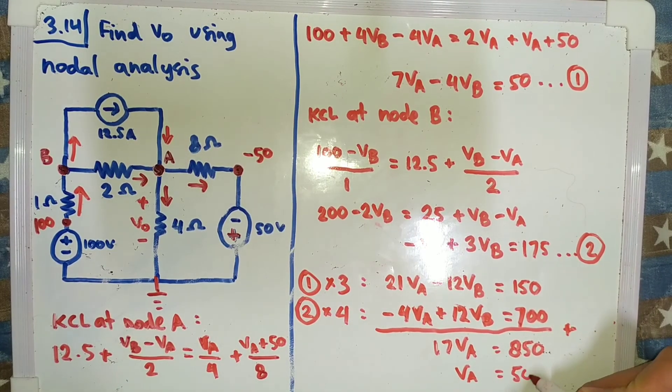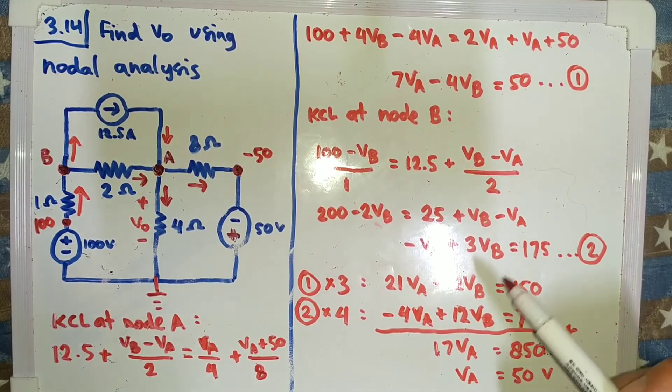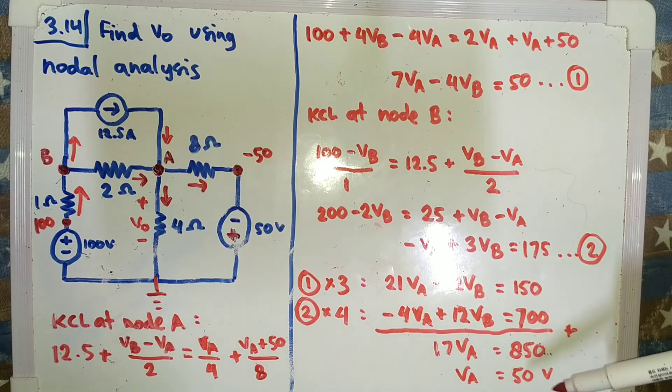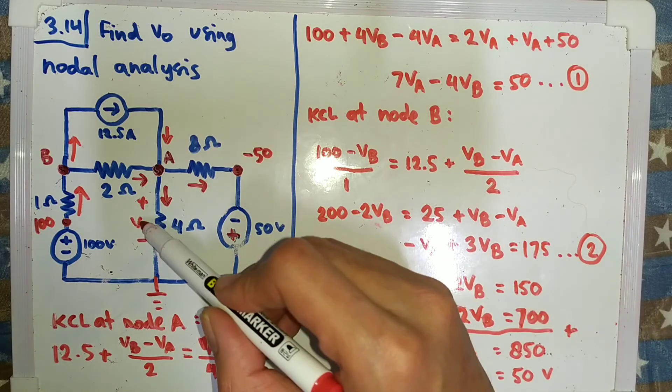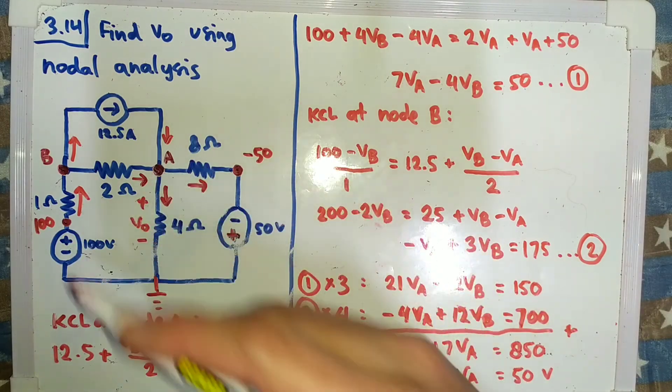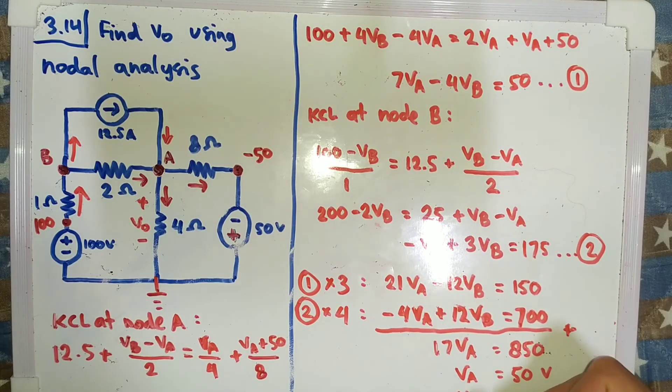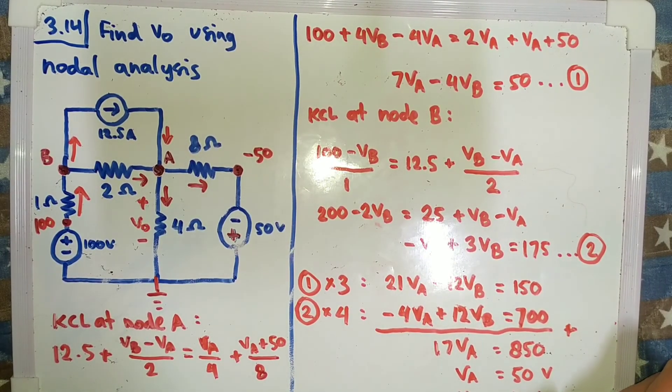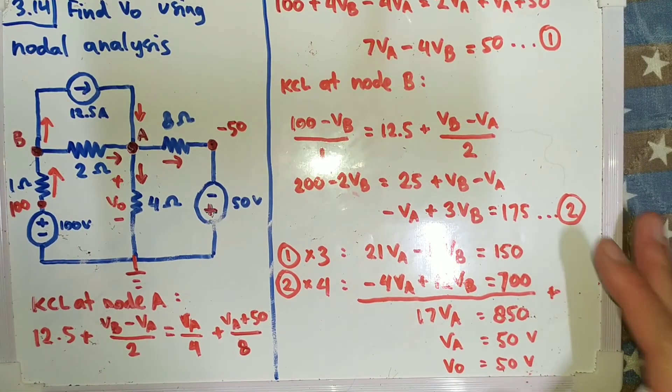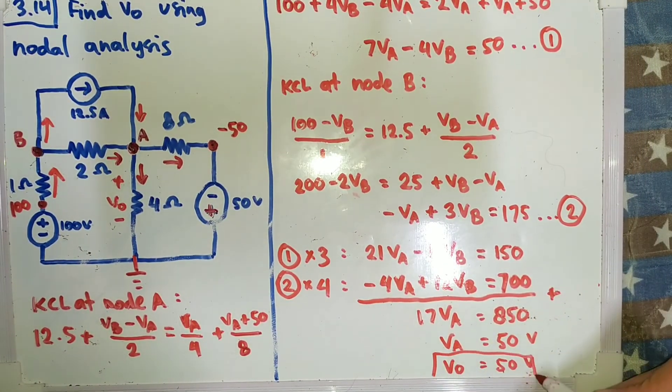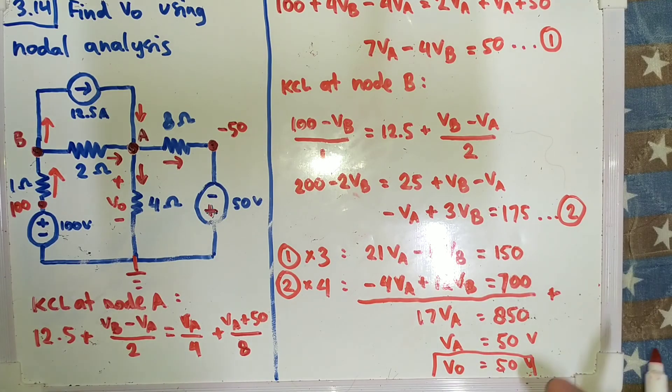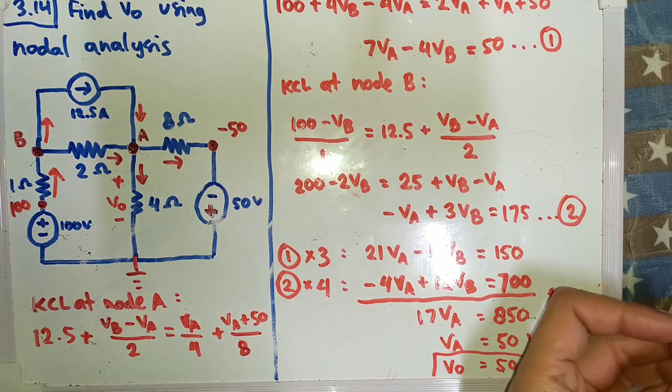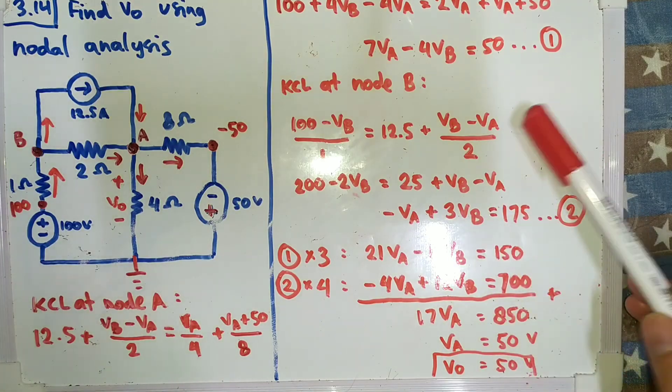Yes, VA is 50. And no, VA is not what they asked, they asked for V0. But V0 is equal to VA, so yes, we get V0, it is 50, and this is our final answer, 50. Okay, thank you for watching. Let me know if you find any mistakes, thank you.